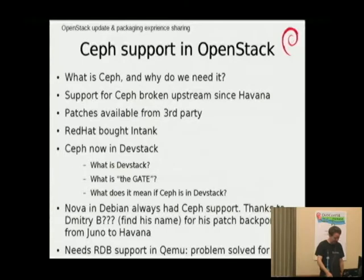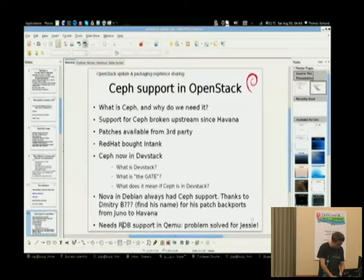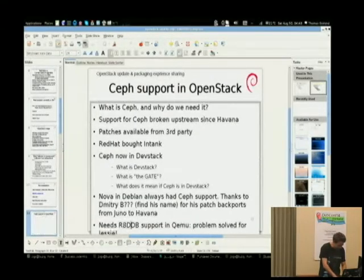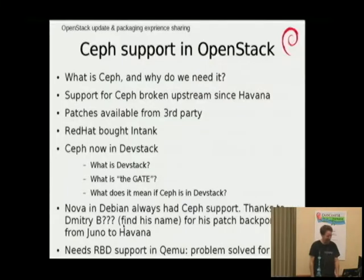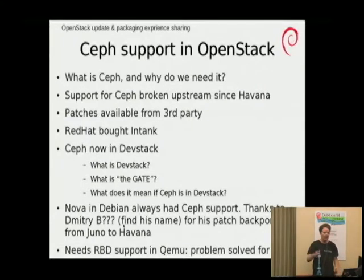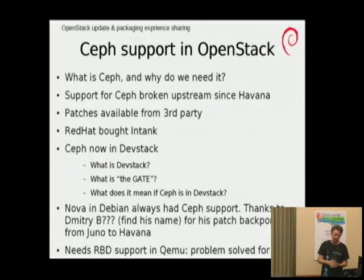We have also solved the problem with RBD support in QEMU. Hopefully that problem is solved for Jessie. RBD is the RADOS Block Device — hopefully QEMU has support for it in Jessie.